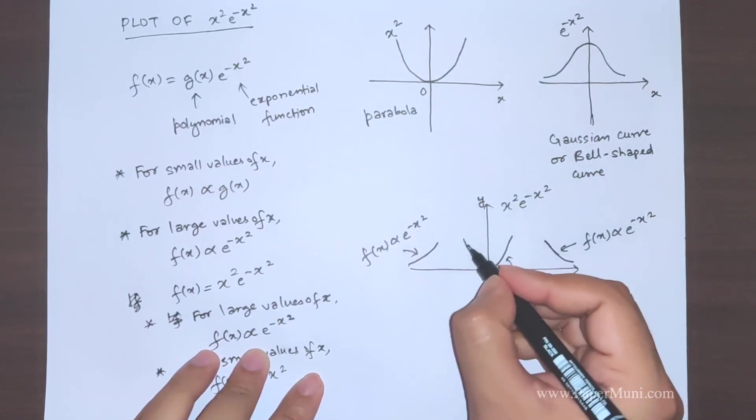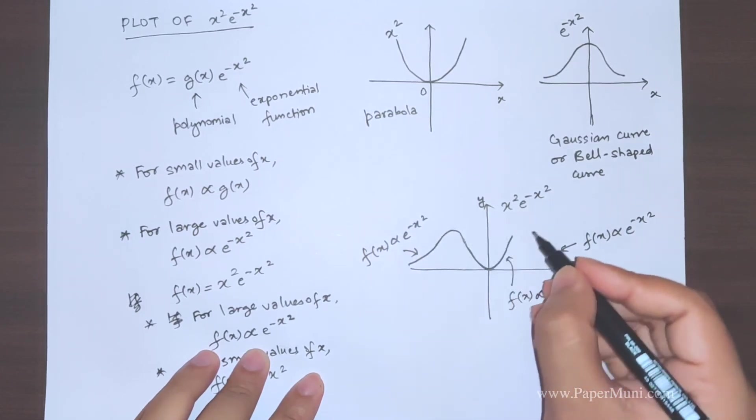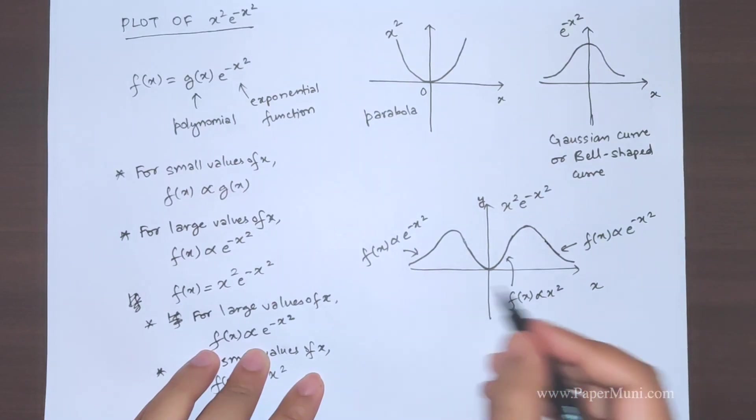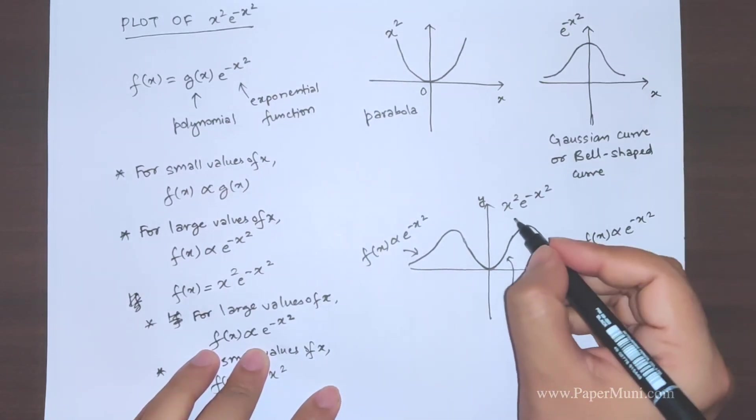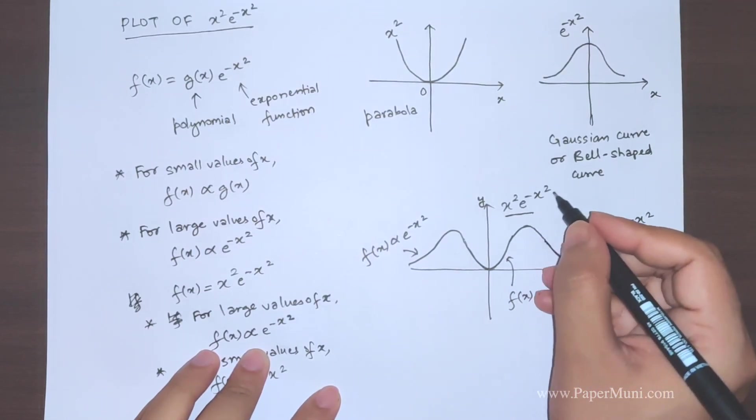So if the graph goes like this it has to come down, then there should be a maximum value somewhere. In this region also there will be some maximum value. So this is how the graph looks like for x square to the power x square multiplied by exponential minus x square.